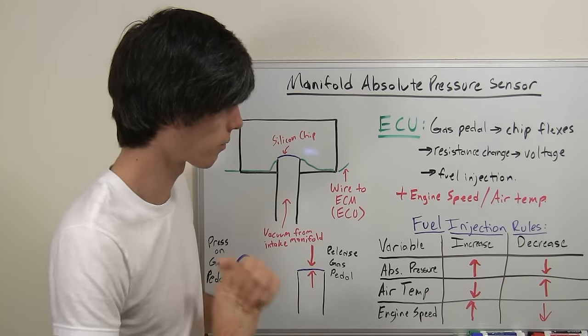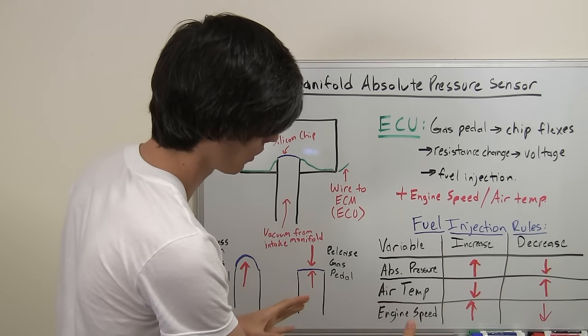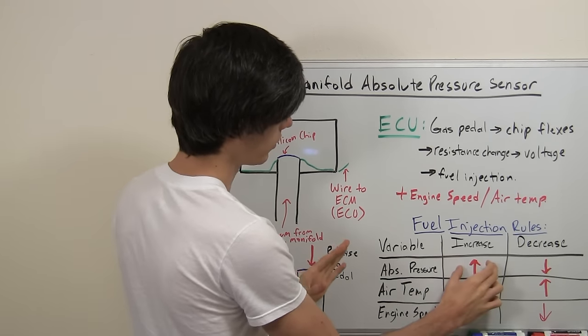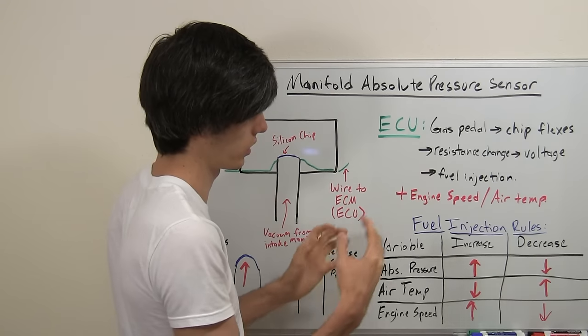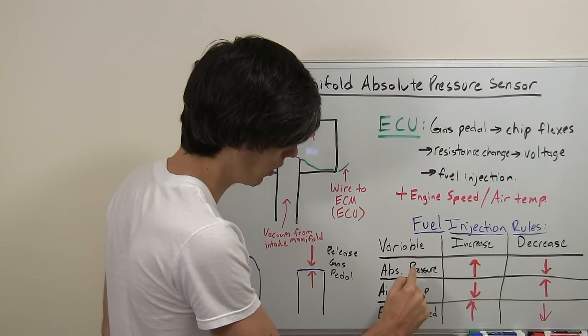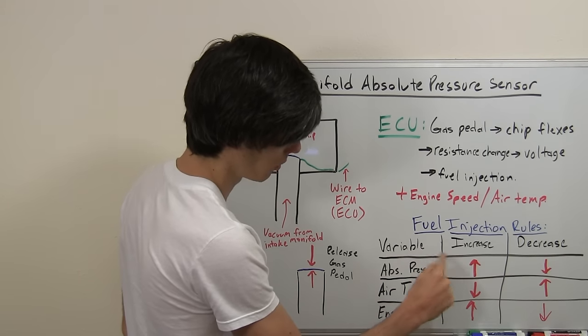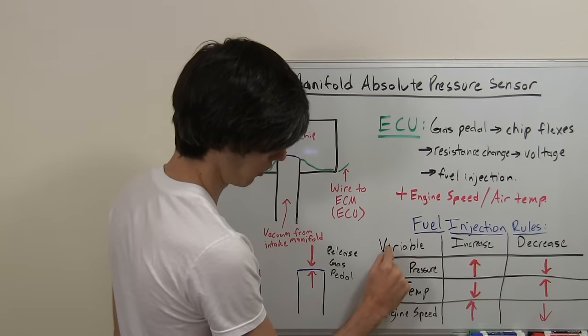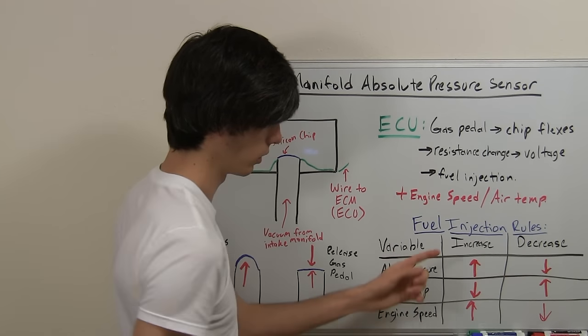So I've built a little chart here that explains what the ECU is going to do in order to tell the fuel injectors to inject more or less fuel depending on a variable. So if you increase the variable what do you need to do? If you decrease this variable what do you need to do as far as fuel injection?